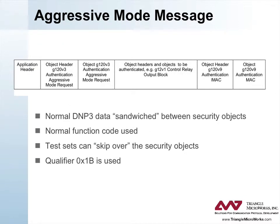This diagram illustrates how objects and headers are arranged when using aggressive mode. The application header and the objects between the aggressive mode request and MAC objects are standard DNP3 objects. The qualifier used for the authentication objects is 1B-hex, which permits test sets that do not understand the security messages to skip over the unknown objects if they choose.